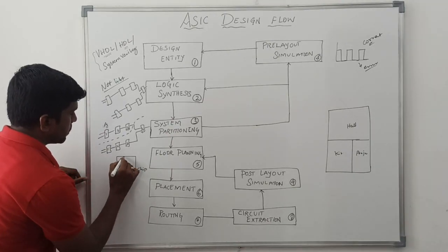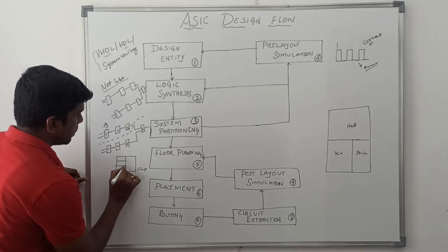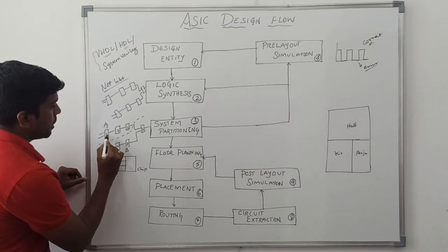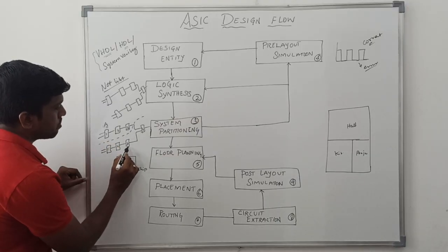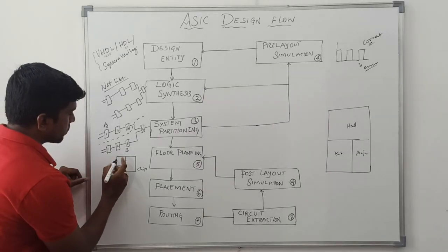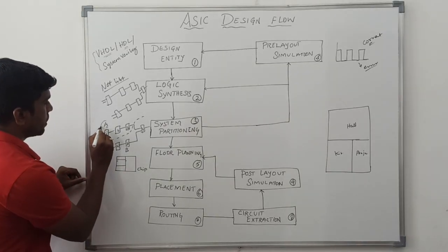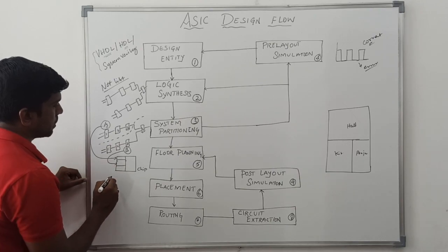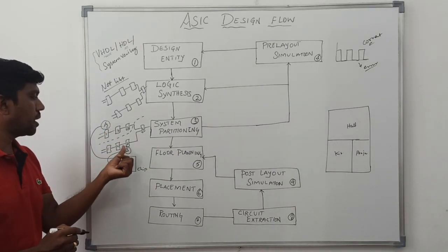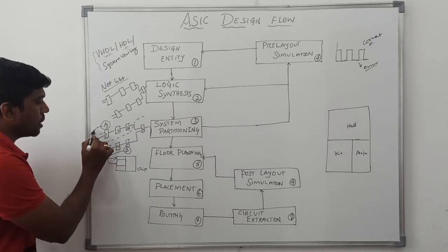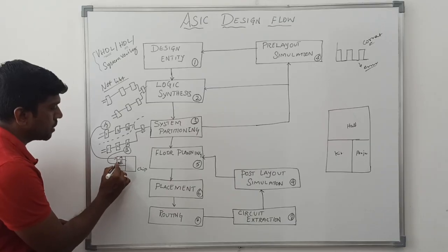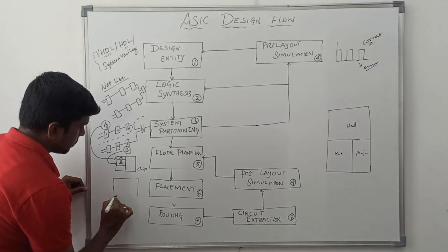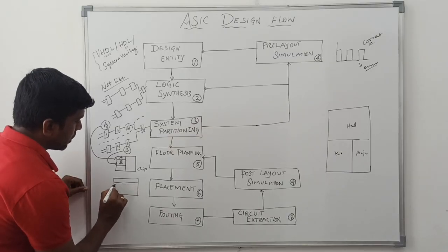On this chip, we arrange the location of blocks A and B. Block A carries three logic cells and block B carries four logic cells. We determine the size of block A and block B, and place them accordingly — the smaller block here and the larger block there. That is floor planning.